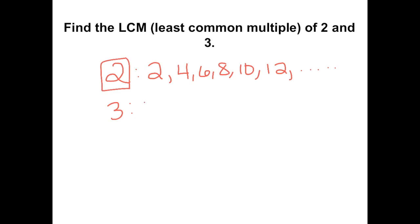Multiples of 3 would be 3, 6, 9, 12, and so on. You would continue making a list of multiples until you find the smallest number that they have in common.